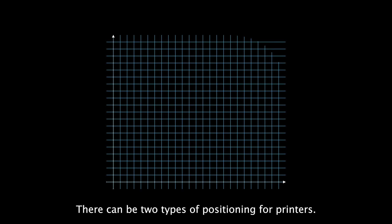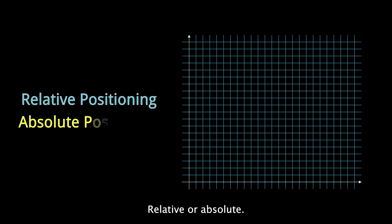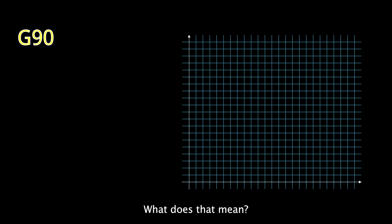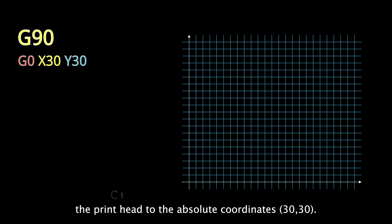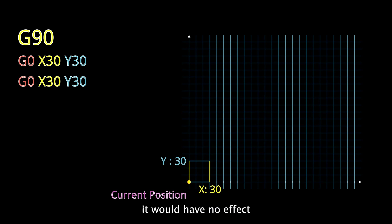There can be two types of positioning for printers: relative or absolute. The G90 command is used to activate absolute positioning. It simply means that this command would move the printhead to the absolute coordinates 30, 30. If I give the exact same command again, it would have no effect because the printhead is already at 30, 30.